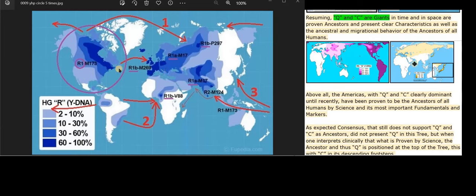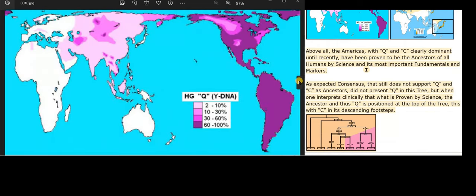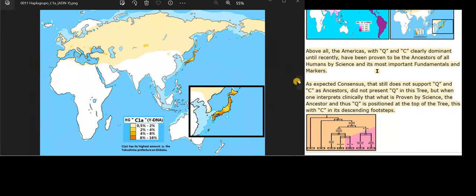Above all, the Americas, with Q and C clearly dominant until recently, have been proven to be the ancestors of all humans by science and its most important fundamentals and markers.